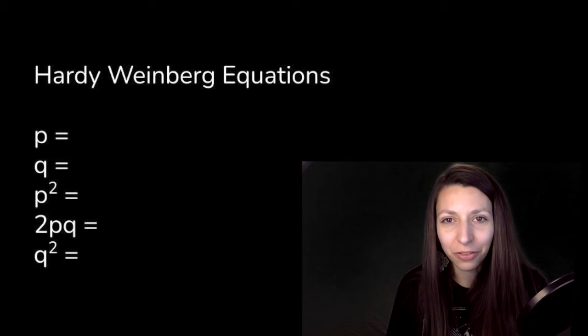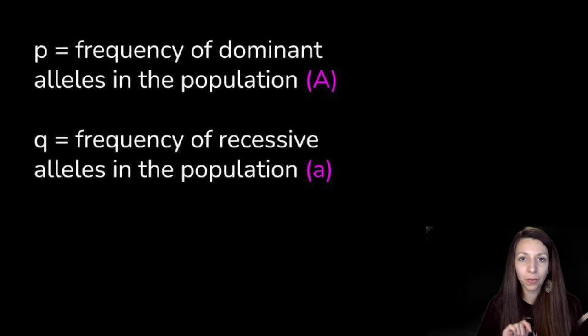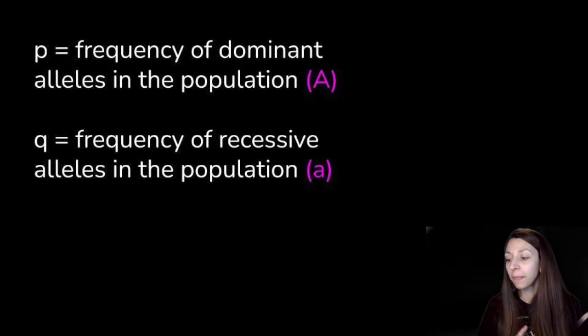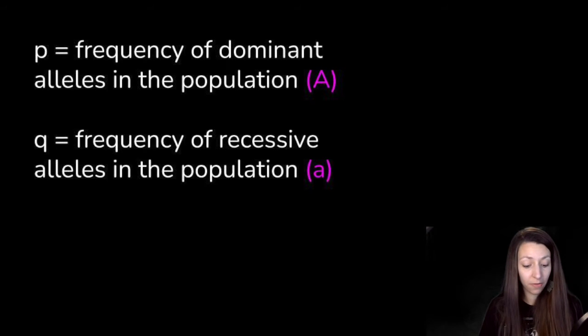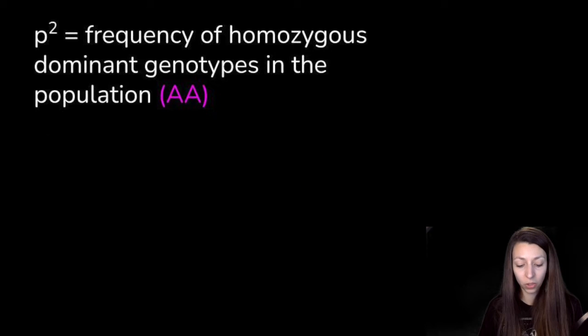What do each of these represent? P equals the frequency of the dominant allele in a population, sometimes represented with a capital letter like big A. Q represents the frequency of the recessive allele in a population, like little a. P² is the frequency of homozygous dominant genotypes in the population, for example big A, big A.